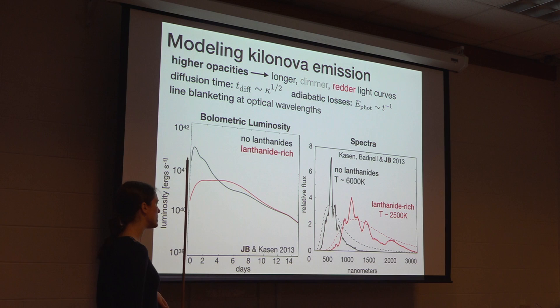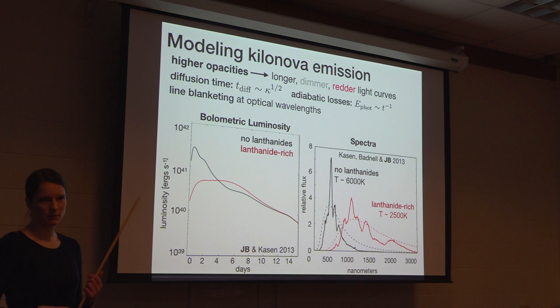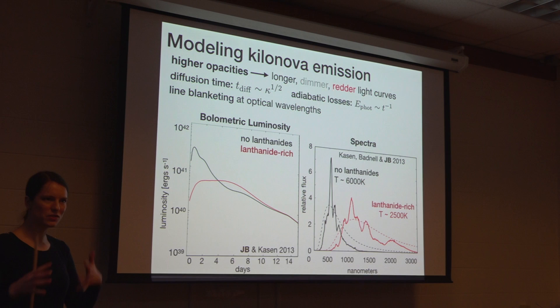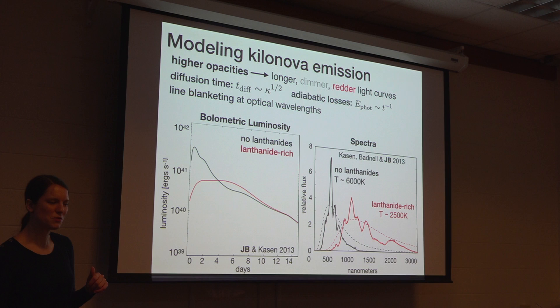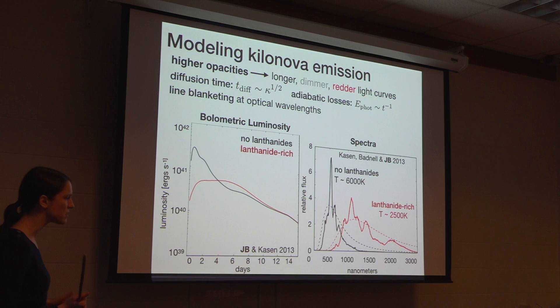I have one quick question. When you say lanthanide, you're also including the actinides — is that right? Yes. Does it make a difference? It's not clear. I think we talk about lanthanides because if you look at our r-process nuclear network calculations, there are just more lanthanide species that are produced — they're more abundant. But I think this is something I was actually just discussing with some nuclear physicists, because they were like, don't forget about the actinides. I think we sometimes tend to use lanthanides as a stand-in for high-opacity f-shell elements. Thank you for that question.